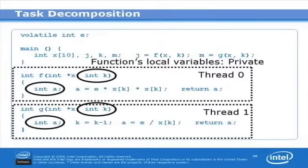So in our case here, we see that the variables k in the parameter list and the integer a that's declared in each function will all be private to each thread. So any updates to those variables will be done to the local or private copies to those threads.